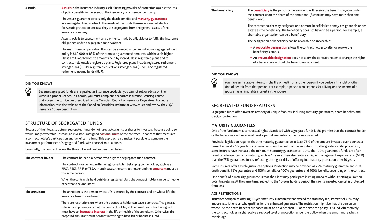The contract holder is a person who buys the segregated fund contract. The contract can be held within a registered plan belonging to the holder such as an RSP, RESP, RIF, or TFSA. In such cases, the contract holder and the annuitant must be the same person. When the contract is held outside a registered plan, the contract holder can be someone other than the annuitant.